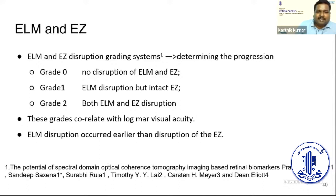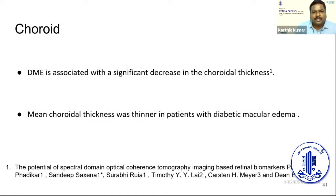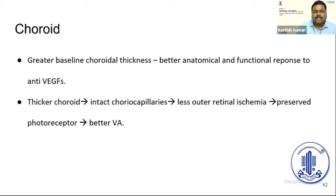Regarding the choroid in DME, choroidal thickness is typically thinner in these patients. A thicker choroid implies intact choriocapillaris, less outer retinal ischemia, and better-preserved photoreceptors, resulting in better visual acuity. Choroidal thickness is therefore a useful parameter to assess in DME.